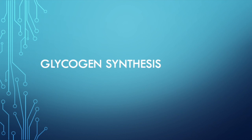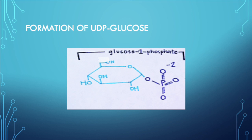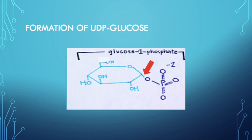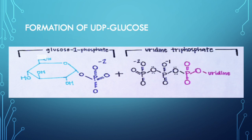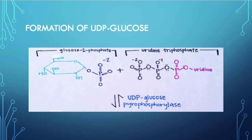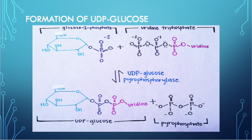We will now discuss the synthesis of glycogen and how glucose is added to a glycogen chain. In order for glucose to be added, we first have to convert glucose-1-phosphate to UDP-glucose. The bond between the glucose molecule and the phosphate group is unreactive. Glucose-1-phosphate, in association with uridine triphosphate, uses the enzyme UDP-glucose pyrophosphorylase to drive the reaction, producing UDP-glucose and pyrophosphate.